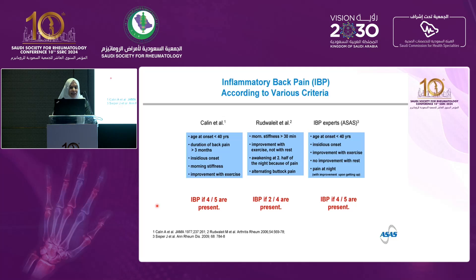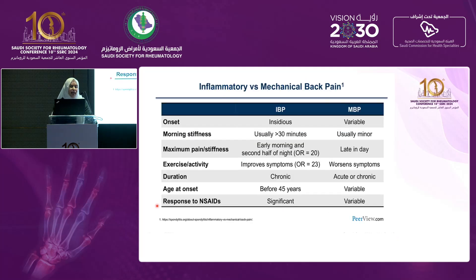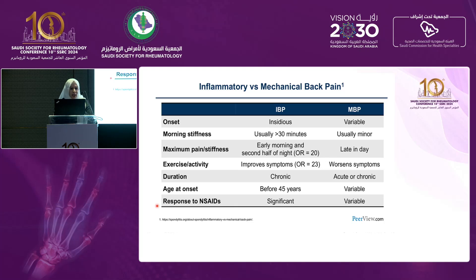This criteria was created to differentiate between the uncommon cause of back pain — inflammatory back pain, which occurs in 5% of people — and the common cause, which is mechanical back pain, affecting more than 90% of people.